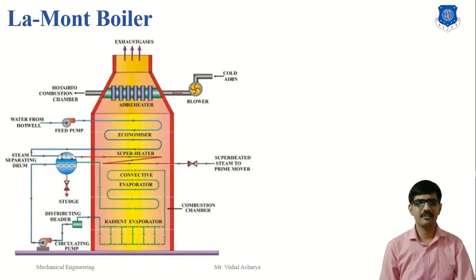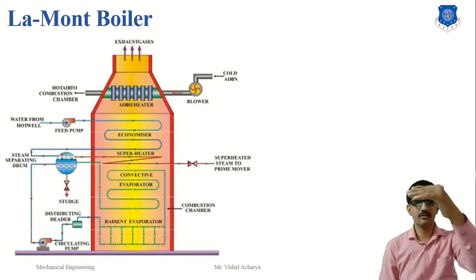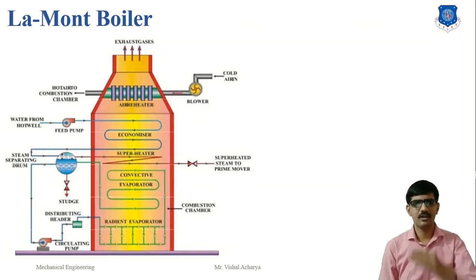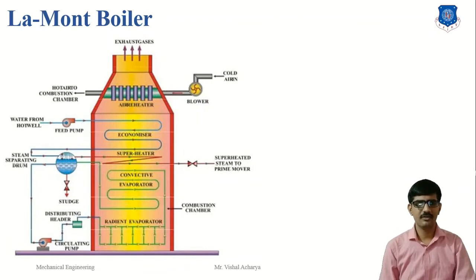The steam separating drum separates the steam from the water. Steam gets collected at the upper portion and water at the lower portion of the drum — meaning the upper part is filled with steam and the lower part is filled with water. The circulating pump is driven by the turbine. It circulates the water from the steam separating drum to the small diameter tubes of the radiant superheater and convective superheater, and back to the steam separating drum. The radiant evaporator increases the temperature of water by radiation.